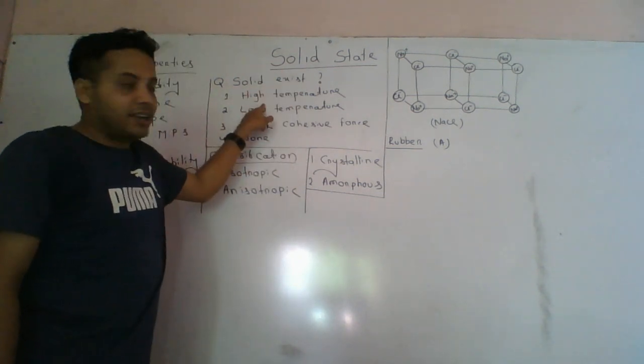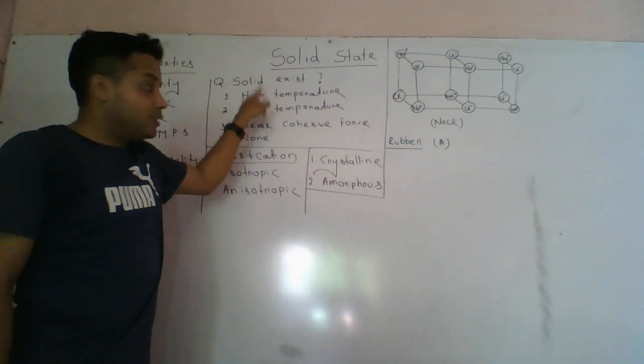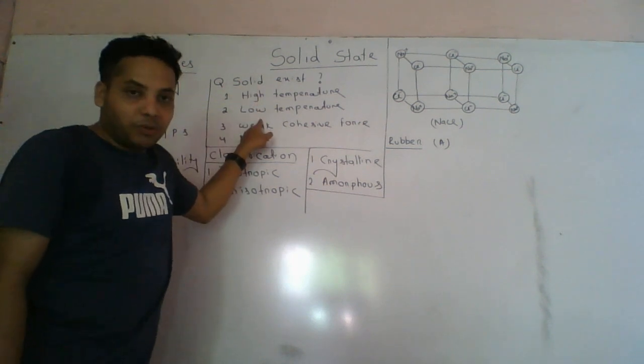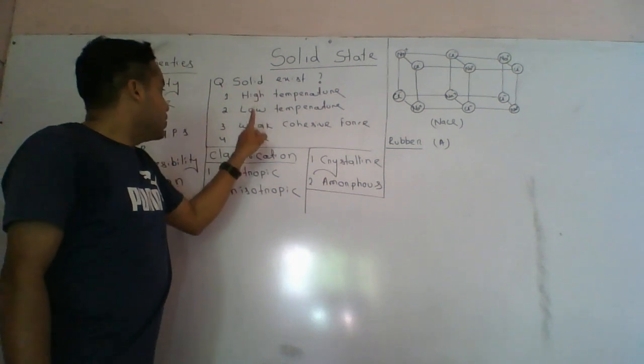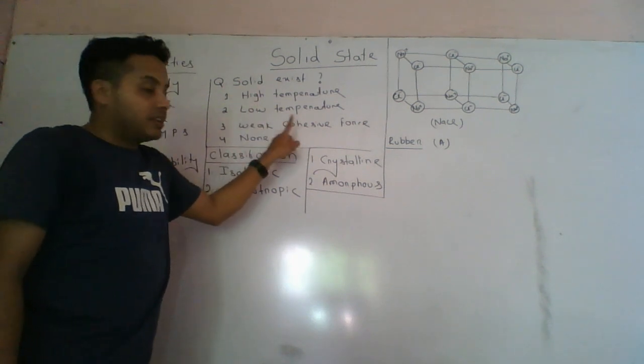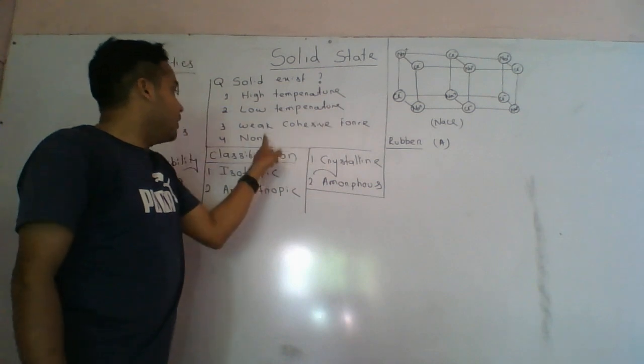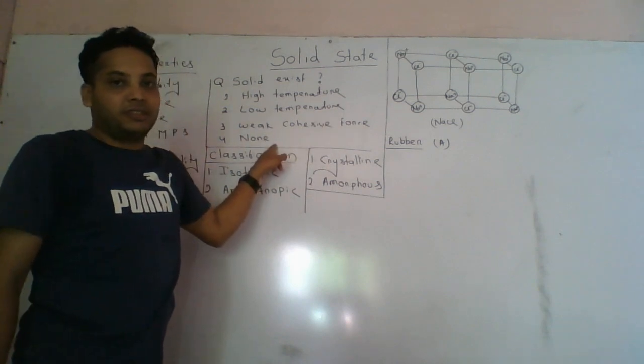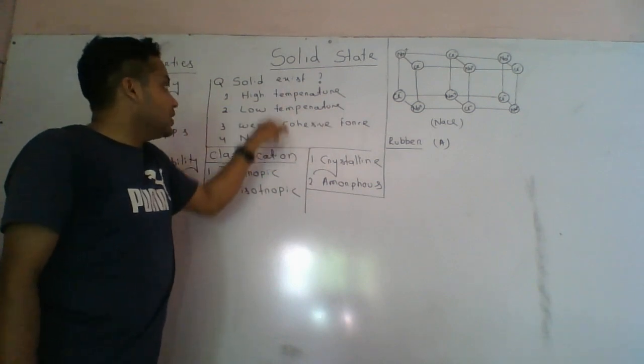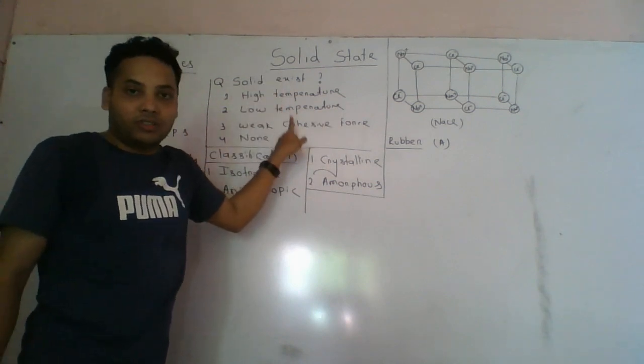Key conditions for solid state include: high temperature resistance, low temperature stability, cohesive force, and non-optic properties. So this is a solid state.